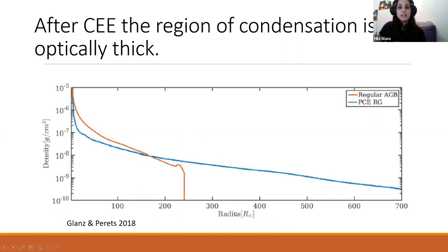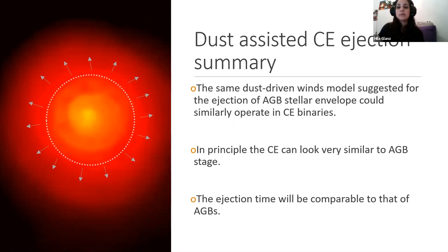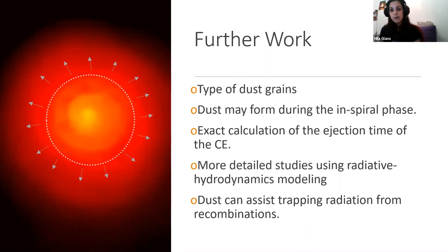We found a potential new fission channel to eject the common envelope by the same model suggested for AGB stellar envelope ejection. Since most common envelopes extend beyond the dust formation radius, mass flow through dust-driven winds should be very effective. In principle, the common envelope can look very similar to the AGB stage and the ejection timescale will probably be comparable. To improve our work, we still need to account for different grain types — they differ in condensation temperature, absorption efficiencies, and sizes — and the dust can also form during the spiral phase. We still need a complete simulation including CE evolution together with dust formation, radiation pressure, heating and cooling via convection, erosion, and more.